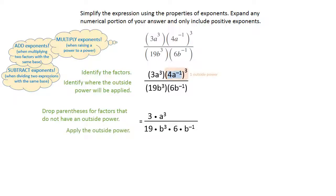Then we can look at the outside power and raise the 4 to the third power and multiply the negative one and the positive three to get a to the negative third power.